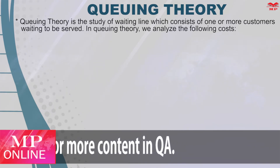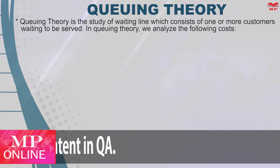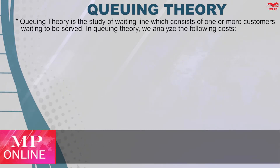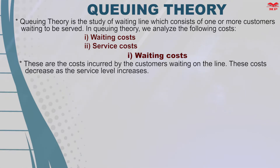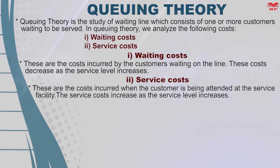Queuing theory is the study of waiting lines, which consist of one or more customers waiting to be served. In queuing theory, we analyze two costs: waiting costs and service costs. Waiting costs are costs incurred by customers waiting on the line — these costs decrease as the service level increases. Service costs are costs incurred when the customer is being attended to at the service facility, and the service cost increases as the service level increases.